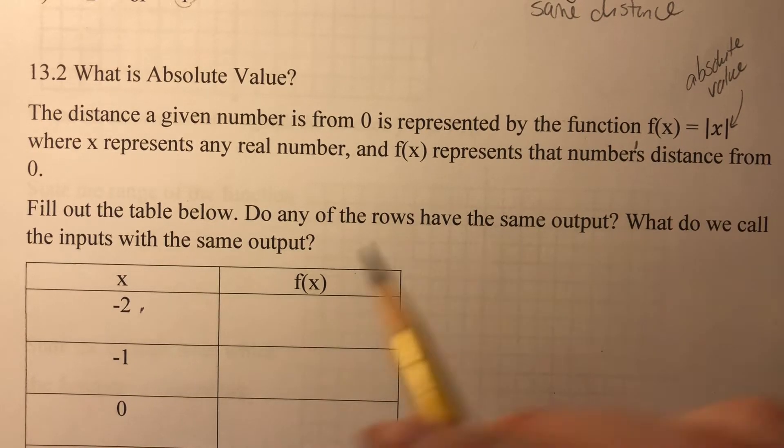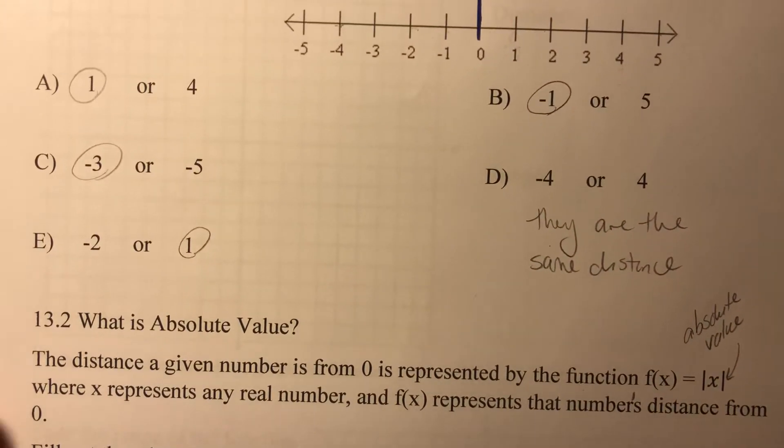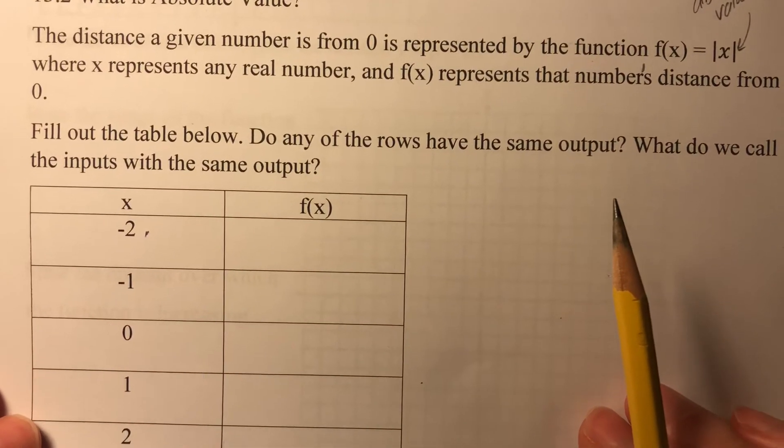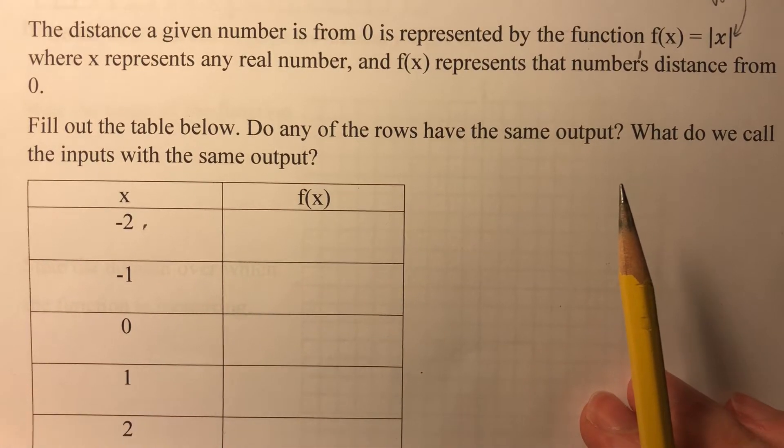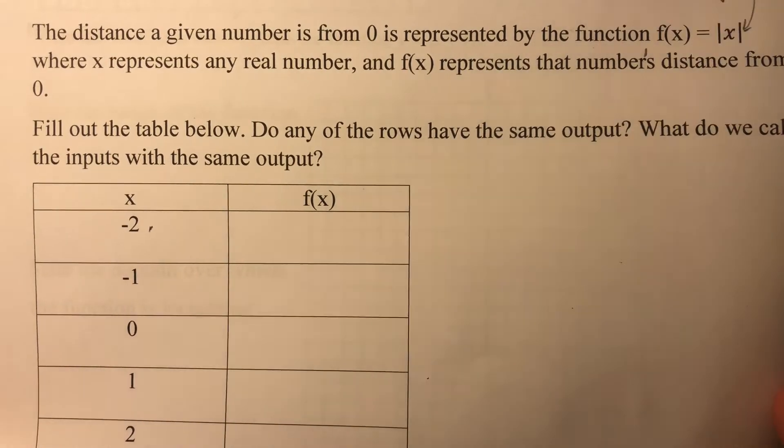So just figuring out how far things are from zero. Fill out the table below. Do any of the rows have the same output? What do we call the inputs with the same output?